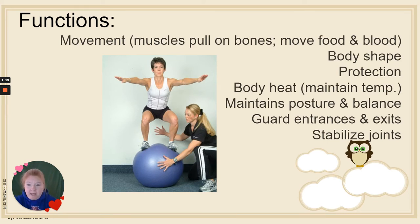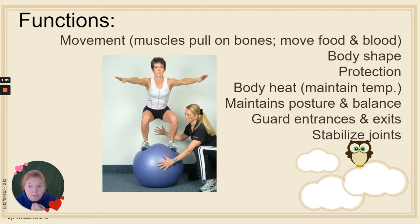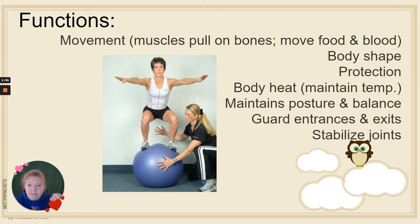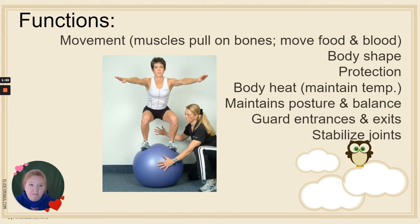Muscles help us maintain our posture and balance. They also guard our entrances and exits — we can close our mouth to guard the entrance into our digestive system, our eyes can blink, the anus guards the exit, and muscles surround the urethra. Muscles also help to stabilize our joints so that bones aren't moving all around.